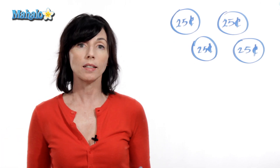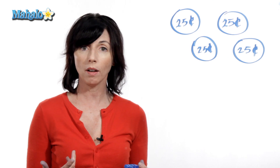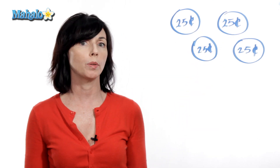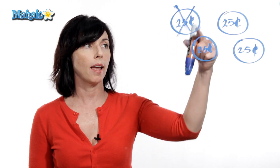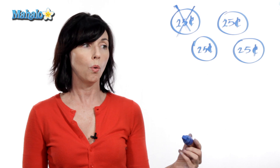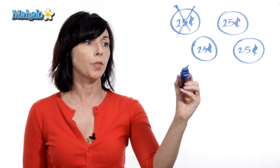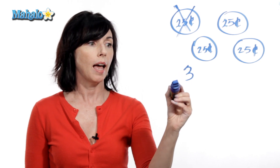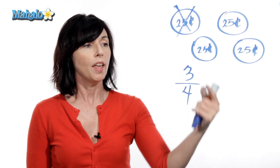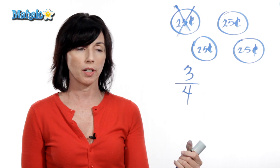So let's say I have $1 in quarters, so I've got four quarters. Suppose I put one of my quarters in a parking meter, so one of them is gone. That means I have three quarters left, or I have three out of my original four quarters left. This is a fraction.